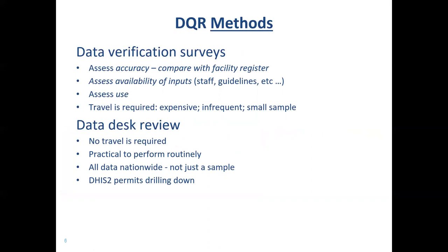There are two principal methods for assessing the quality of routine data. The first involves surveys, or at least a supervisory visit. It requires a visit to the health facility to examine the facility registers, recount the data, and compare that recount with the data that have been recorded and reported on the monthly report. This type of visit also allows the surveyor or supervisor to collect information about such things as the availability of staff, the presence of standard operating procedures, or whether there are sufficient numbers of reporting formats available. The supervisor or surveyor can also examine the health facility or the district health office to see evidence of use of data and visualization of data.